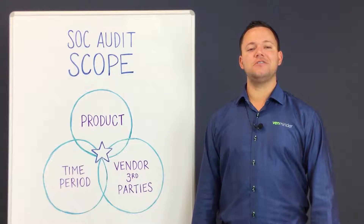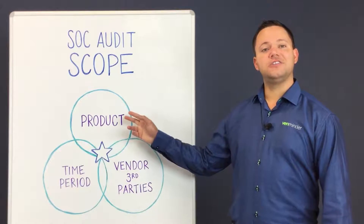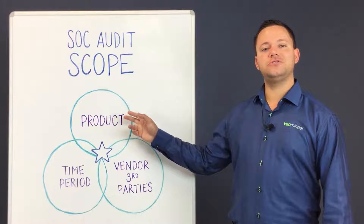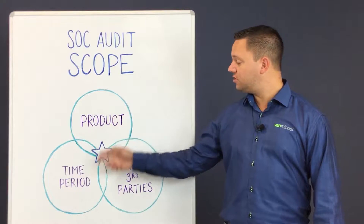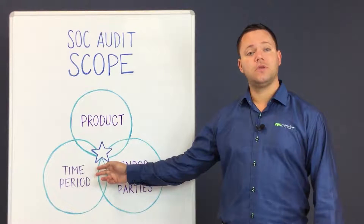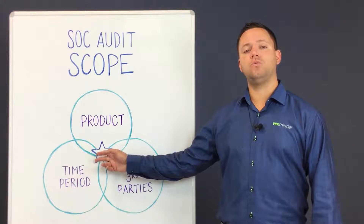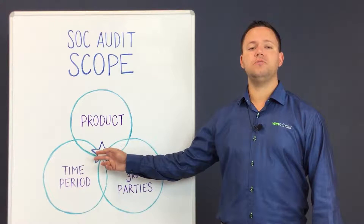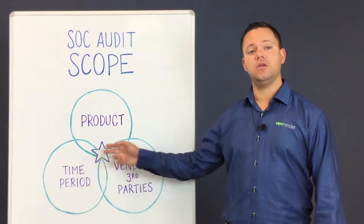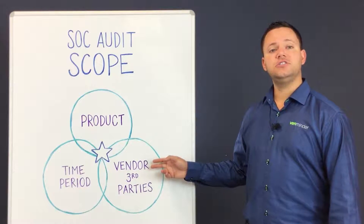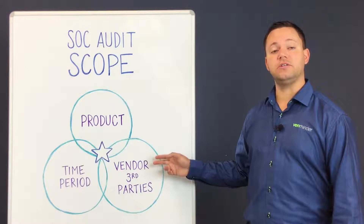Let's get started with the three questions. Question number one: is the product you use the vendor for included within the scope of the report? Question number two: what was the audit period of the most recent audit and was the report issued less than one year ago? Question number three: does your vendor have critical vendors of their own that directly impact you?